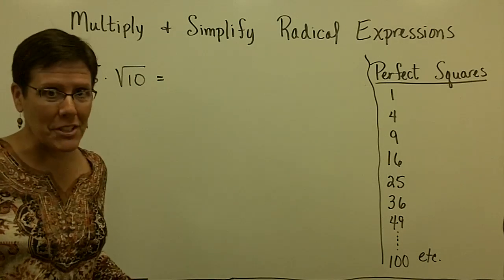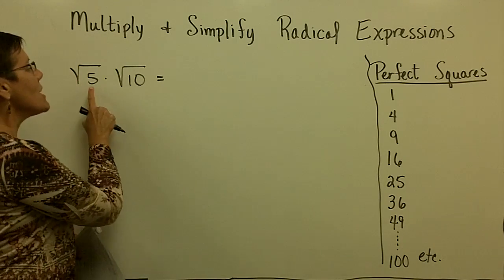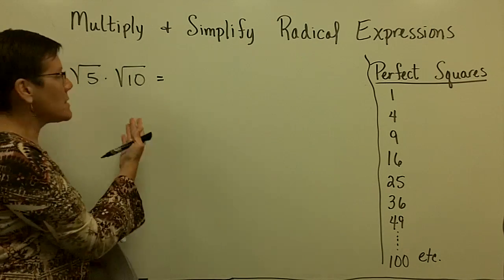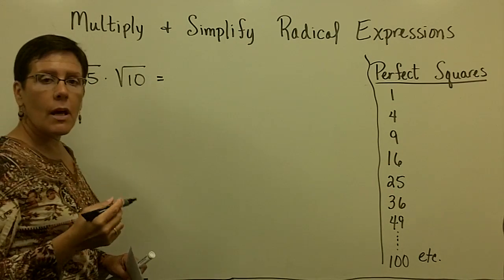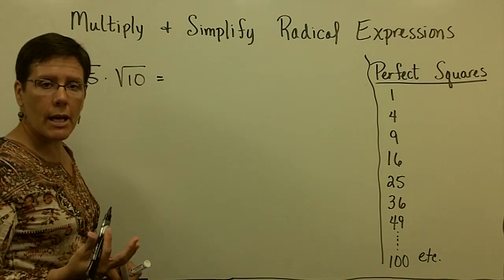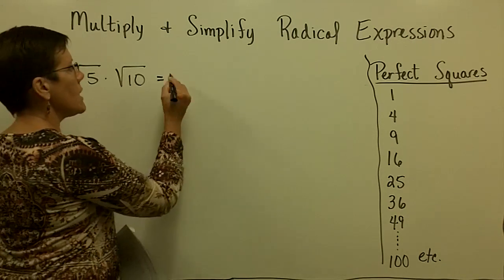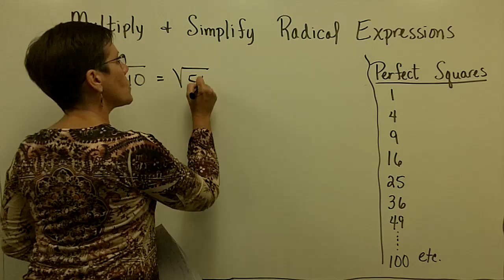Couple of approaches. One of the simplest ways is to take the value under the radical, called the radicands, and multiply them together. The product rule for radicals says that I'm allowed to do that. So 5 times 10 is 50, and this is equal to the square root of 50.